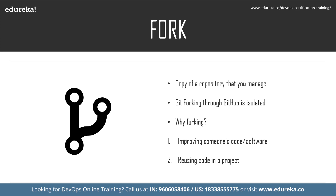Forking a repository on GitHub is mainly done for two purposes. The first is to improve someone's code or software — improving can mean adding a new feature to the existing software, not just fixing bugs. For example, if I navigate a repository and like the concept of the software but have something else in mind to add, I can fork the repository, develop the feature on my machine, and simply send the changes to the owner of the repository.